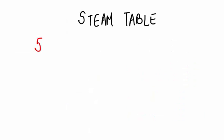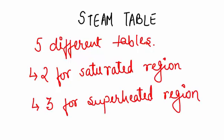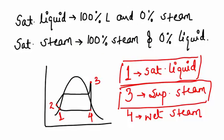two for saturated region and three for superheated region. You can find the properties of point 1 from tables 1 and 2, and for point 3, you can use the superheated table. Remember, there is no table for the wet region. To get values for the wet region, we use formulas which I'll discuss in next videos.